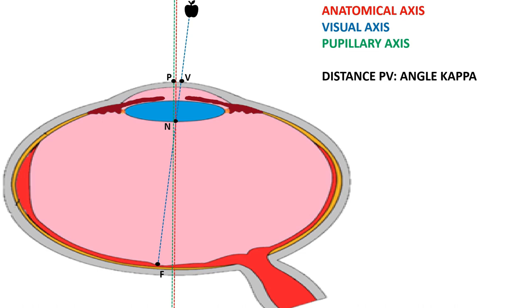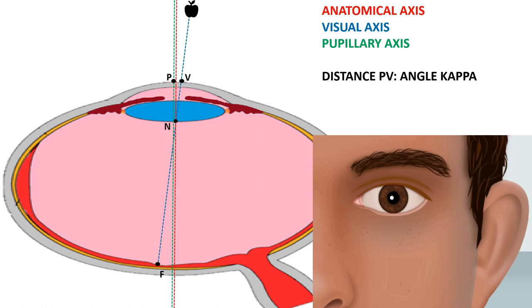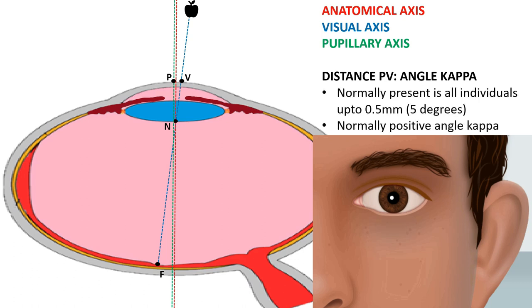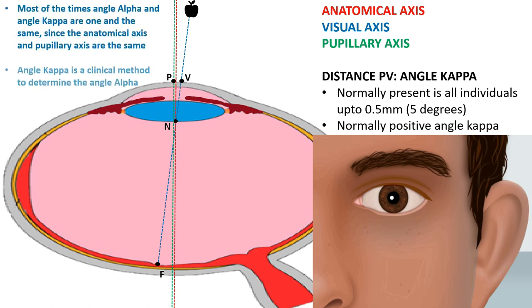Angle kappa is more important than angle alpha because it can be clinically assessed. As seen from the front view of the eye, the corneal reflex is a little nasal to the center of the pupil — this is called a positive angle kappa. If the corneal reflex were temporal to the center of the pupil, it would be called a negative angle kappa. Most of the time, angle alpha and angle kappa are one and the same since the anatomical and pupillary axes are almost the same, but angle kappa is essentially the clinical method to determine angle alpha.